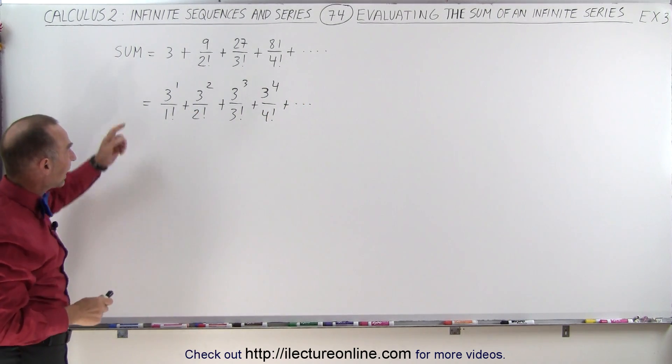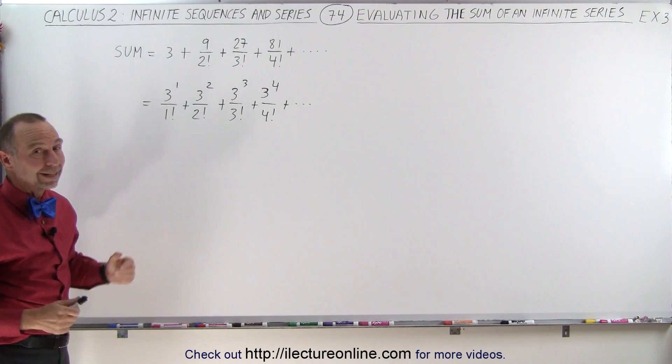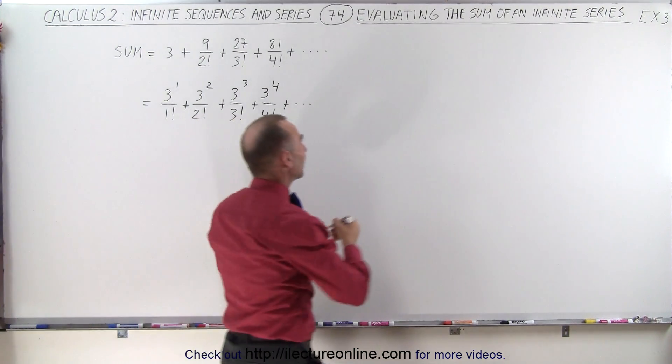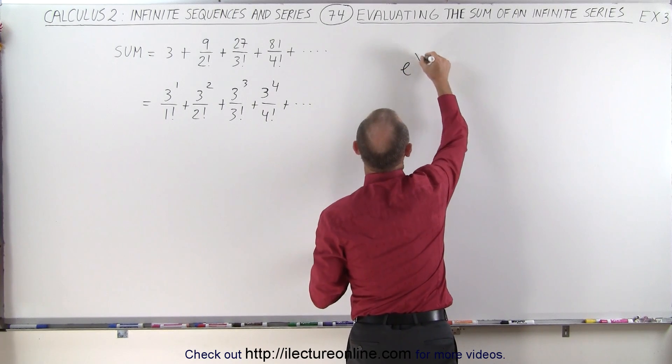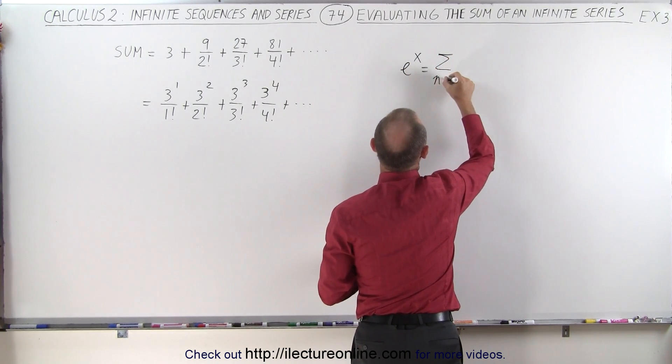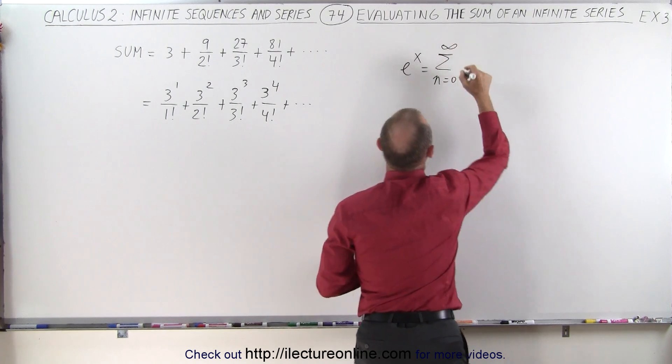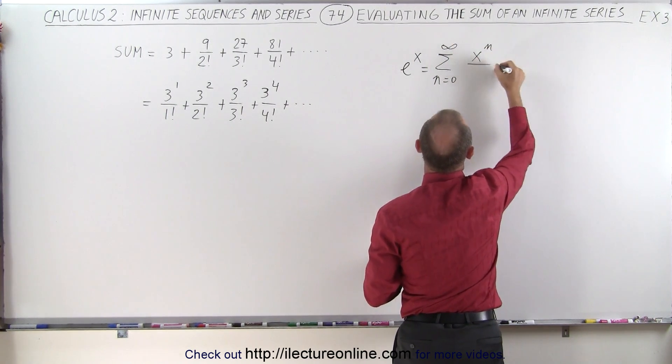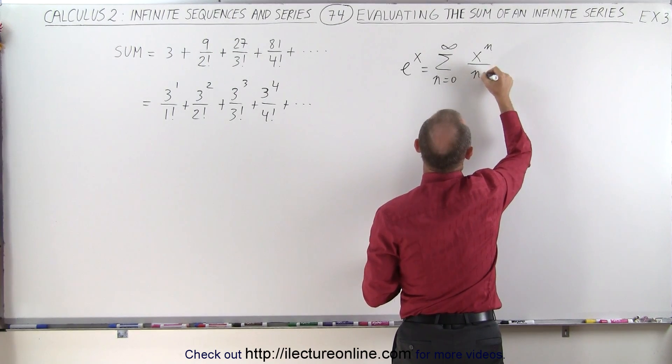And whenever we have x to the n over n factorial, that is the McLaurin series of e to the x. So e to the x is equal to the infinite sum from n equals 0 to infinity of x to the n power divided by n factorial.